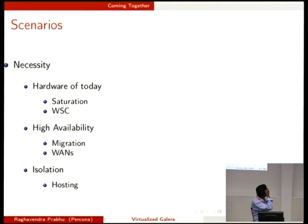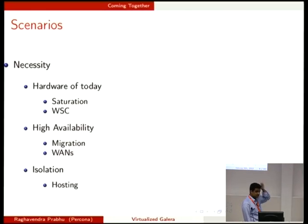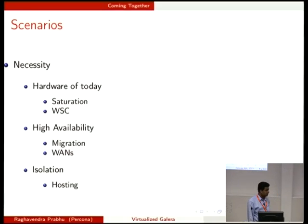When I mentioned scenarios, warehouse-scale computing is one of them, and saturation is another. I've seen many deployments of Galera where a single application may not be able to saturate the entire node, so we can have multiple instances — that is one deployment scenario. With high availability you can migrate to other nodes. This kind of synchronous replication also works over WANs, not just LANs, and it is WAN-aware. There's also isolation, which may not be required in a WSC scenario but may be required when hosting databases of different clients so they don't interfere with each other.